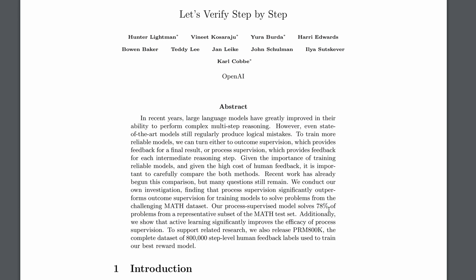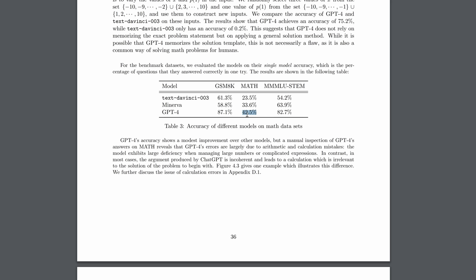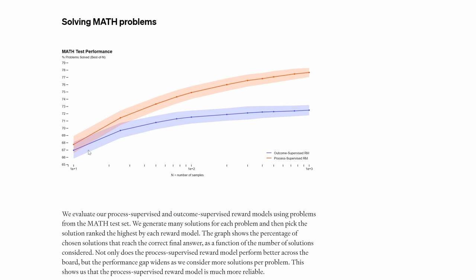It was able to solve 78% of problems from a subset of the math test set. Not only is that almost double GPT-4's raw performance of 42.5%, which is about double GPT-3's performance of 23%, it also outperformed just rewarding correct answers. The blue line represents using a model that rewarded correct answers only, and then you have the reasoning or process supervised RM at the top. So even when you explicitly reward correct answers, you get fewer correct answers than rewarding good working out. And yes, that did surprise OpenAI.